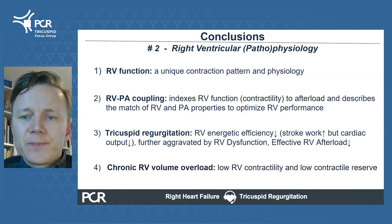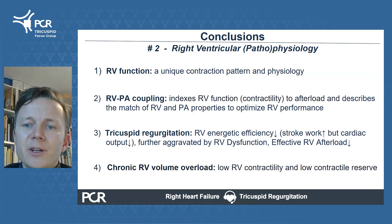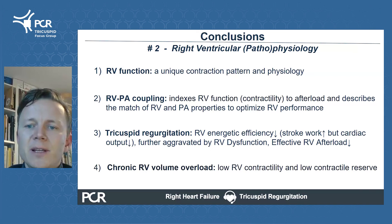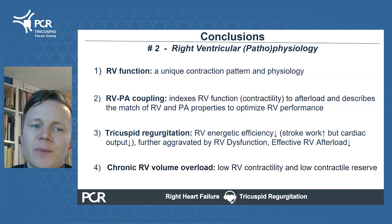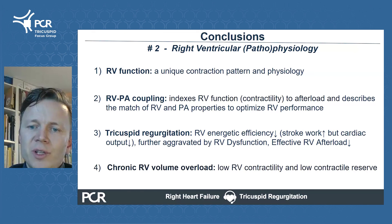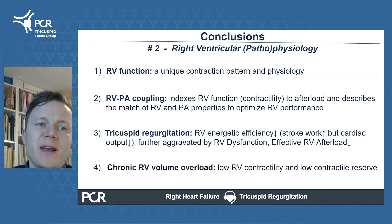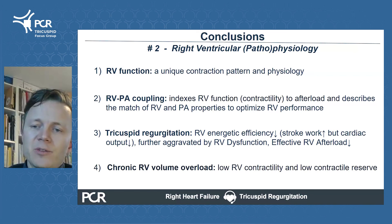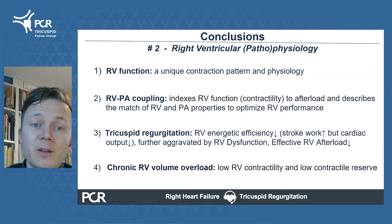To conclude: RV function exhibits unique physiology. RV-PA coupling describes how well RV function is compensated for a given afterload. Tricuspid regurgitation induces RV volume overload, reduces energetic efficiency, and reduces effective afterload. Chronic RV volume overload is characterized by low RV contractility and low RV contractile reserve. Thank you, and I hope to see you in the next video.